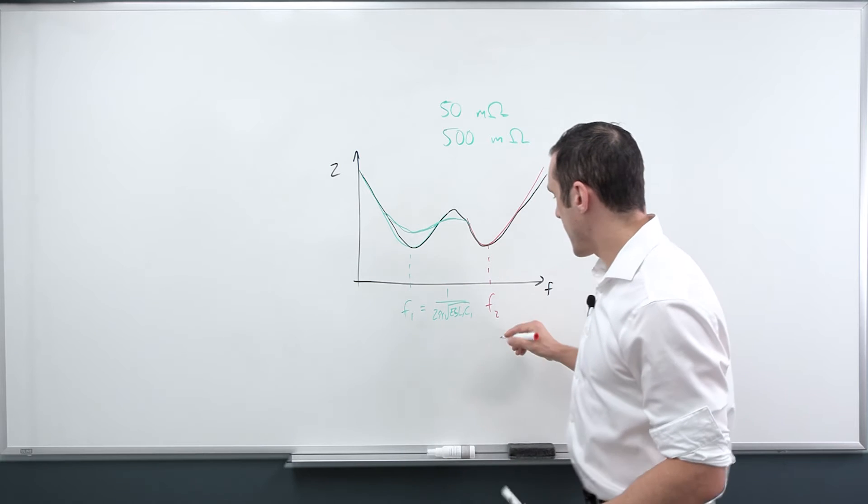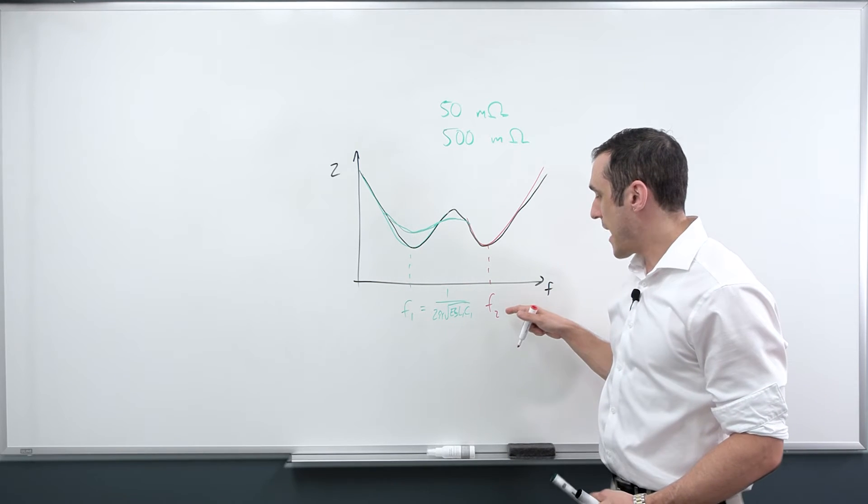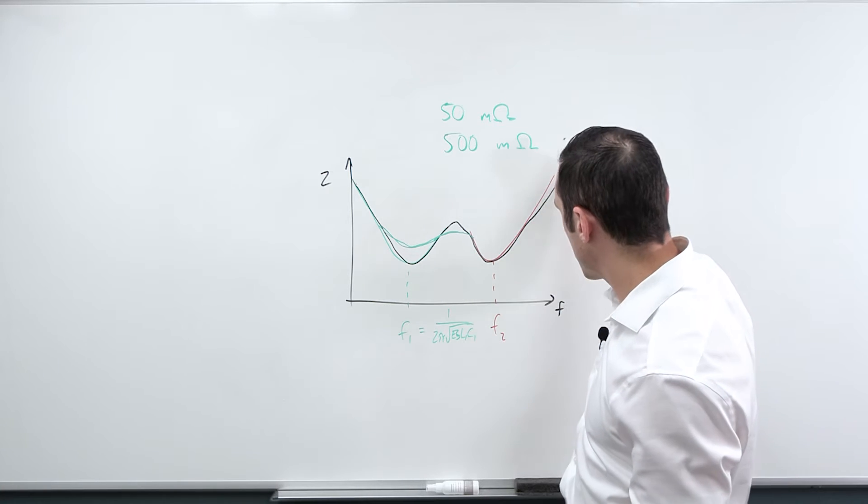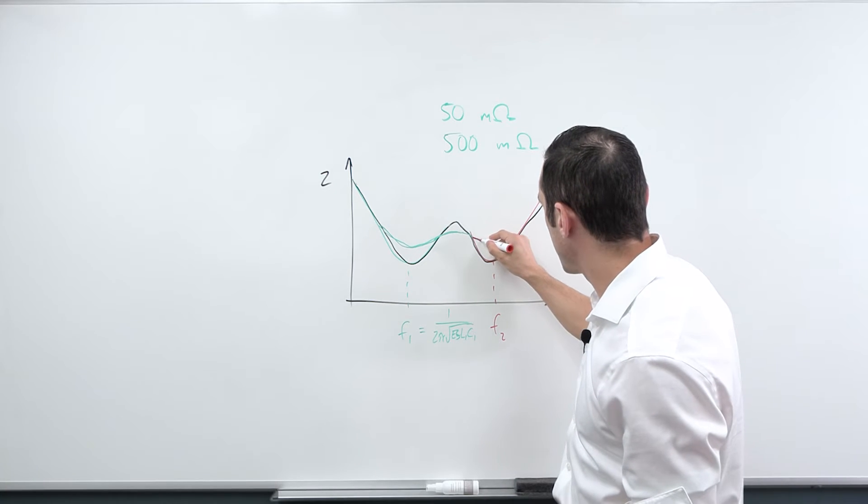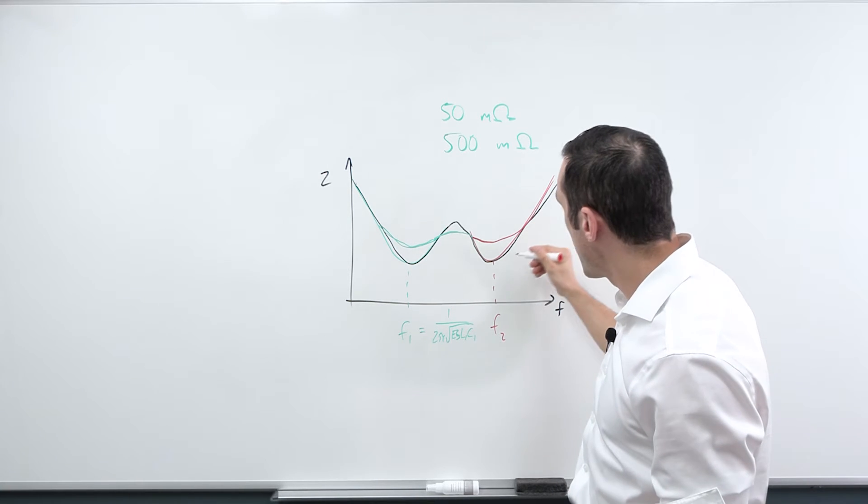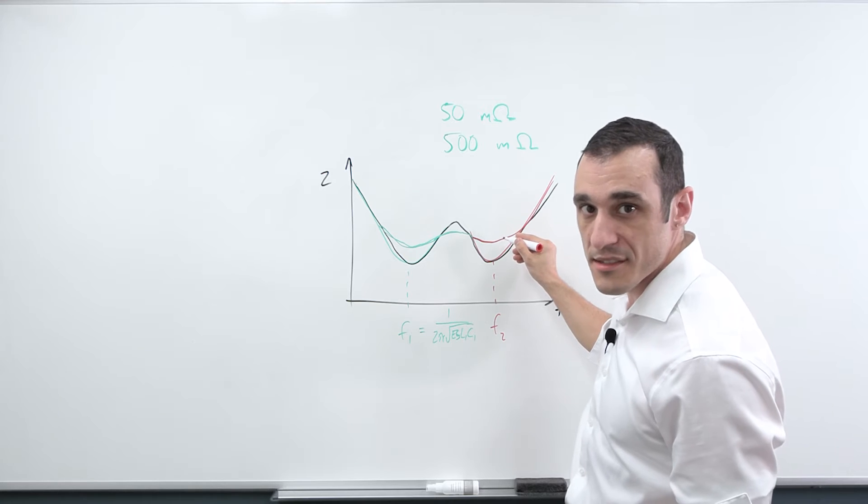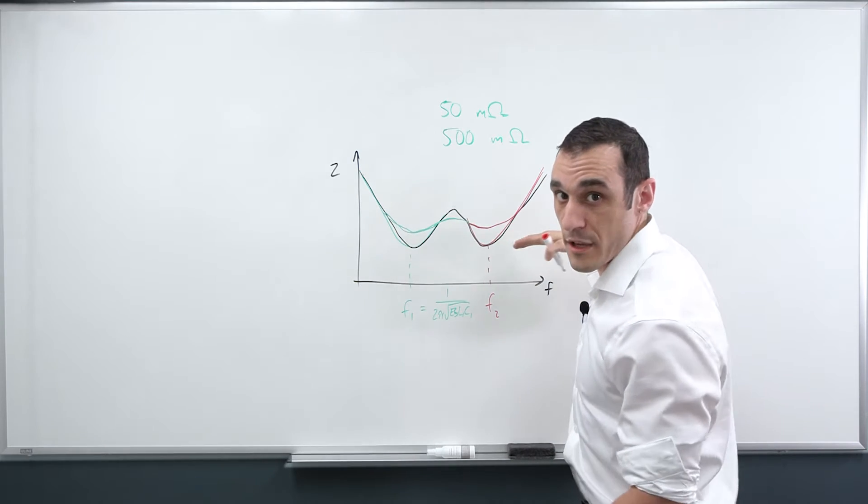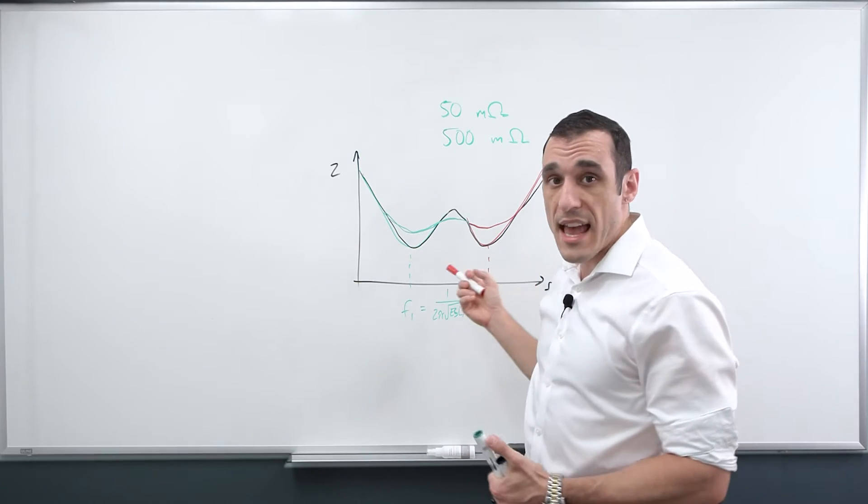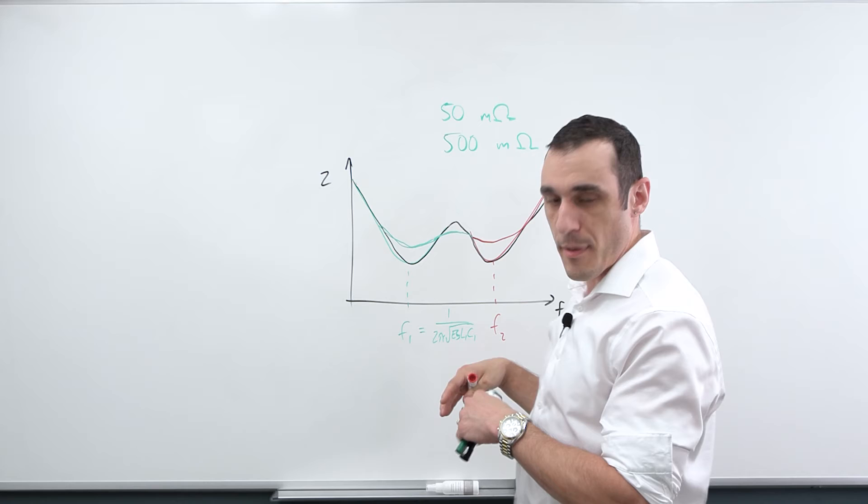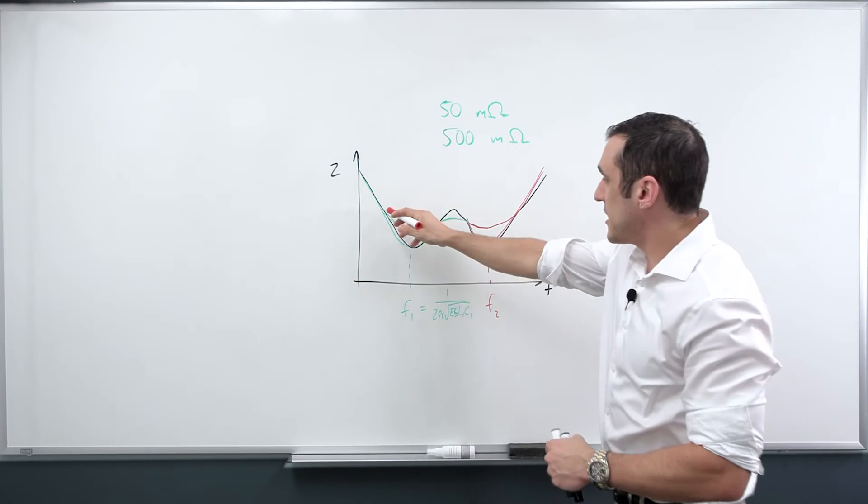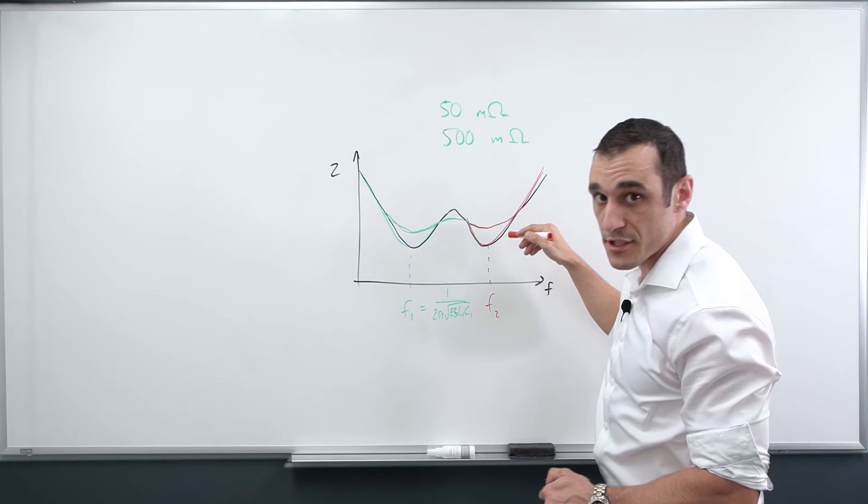If we did the same thing for F2, let's say we wanted to use a high ESR value capacitor for F2. Well, again, instead of having this deep curve here that then rises up very quickly, we would have something that is a bit of a slower transition into the inductive region and then a little bit higher impedance. But you'll notice that this region of the PDN impedance spectrum is actually flatter. So that's not a bad thing. Essentially, what it means is that you might be able to use a smaller number of capacitors to bring down the PDN impedance to a lower level. However, the PDN impedance spectrum could be flatter as a result.